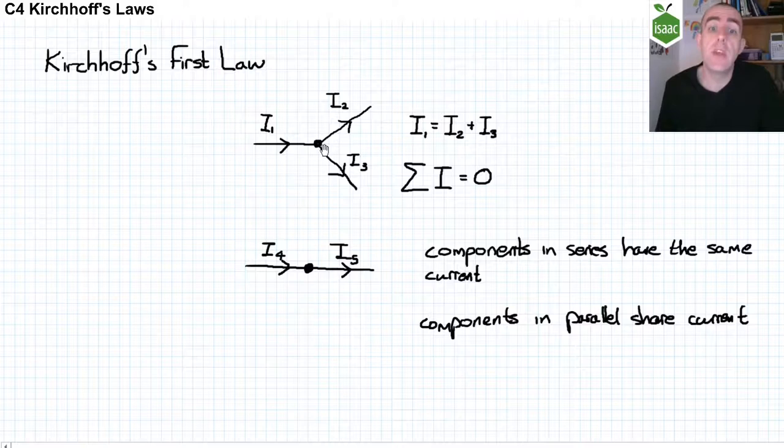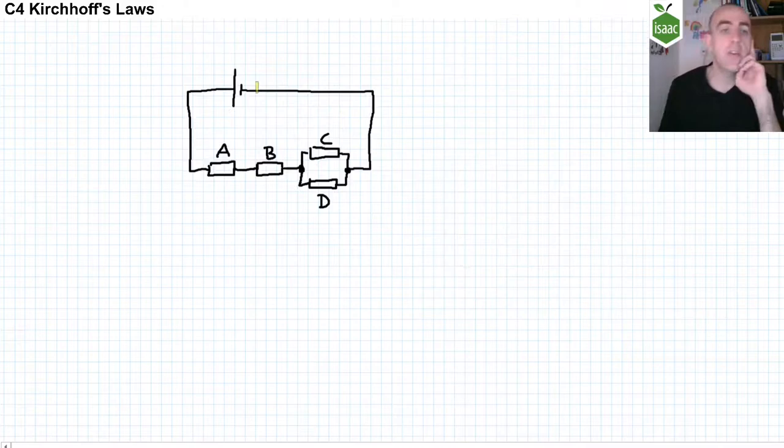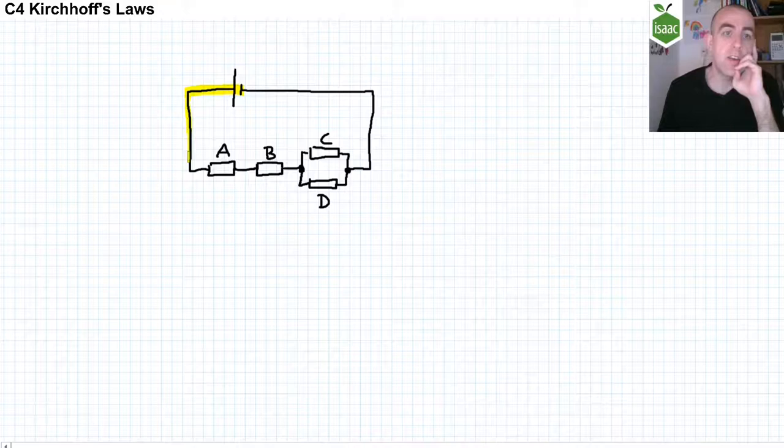If we have a look at an example of this, the current in the part of the circuit I'm now highlighting is the same at all points in the circuit where I am highlighting. So the current through component A is exactly the same as the current through component B.